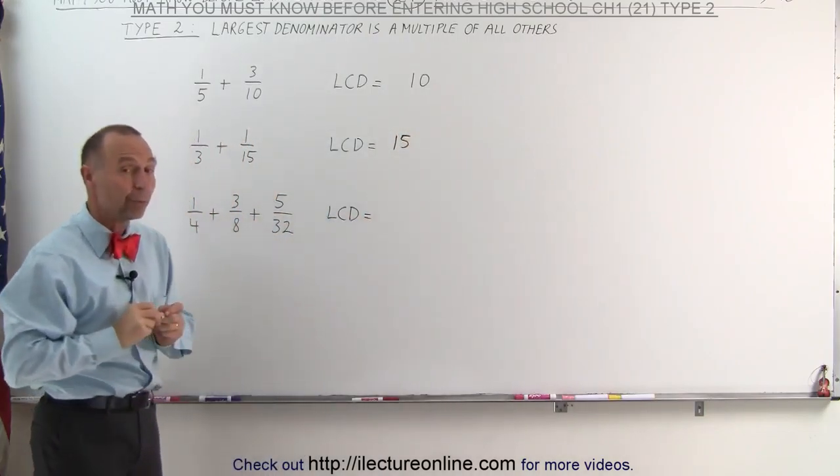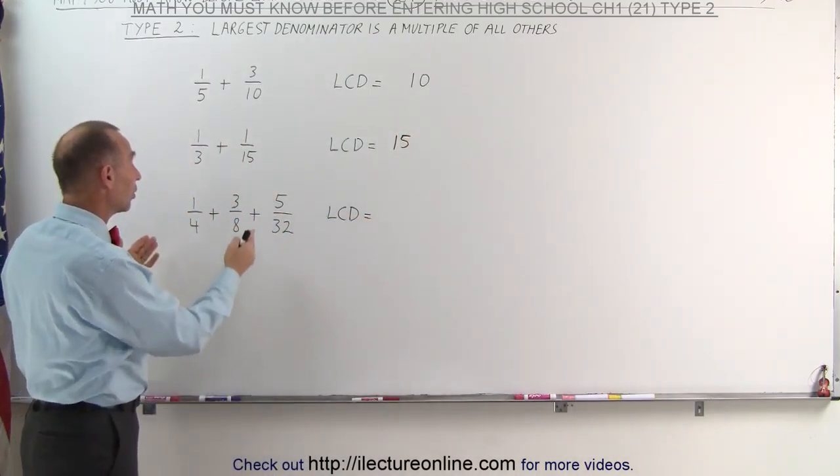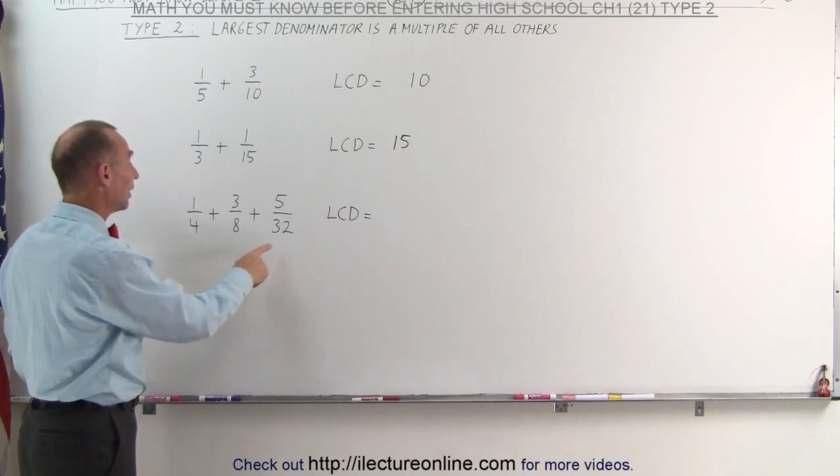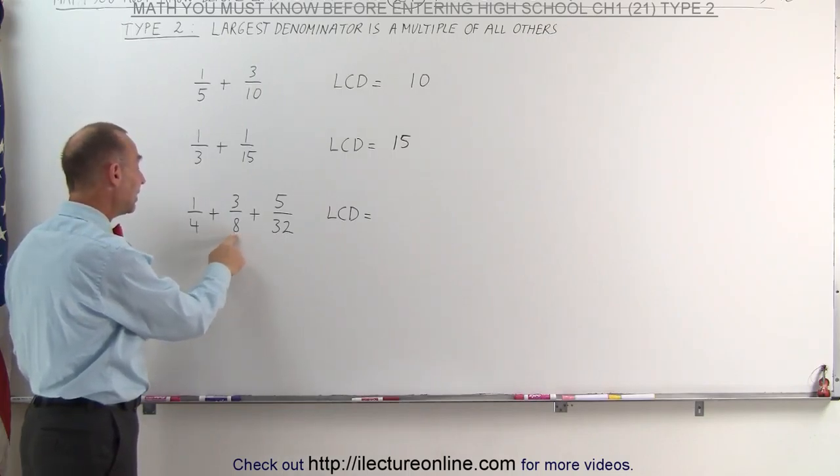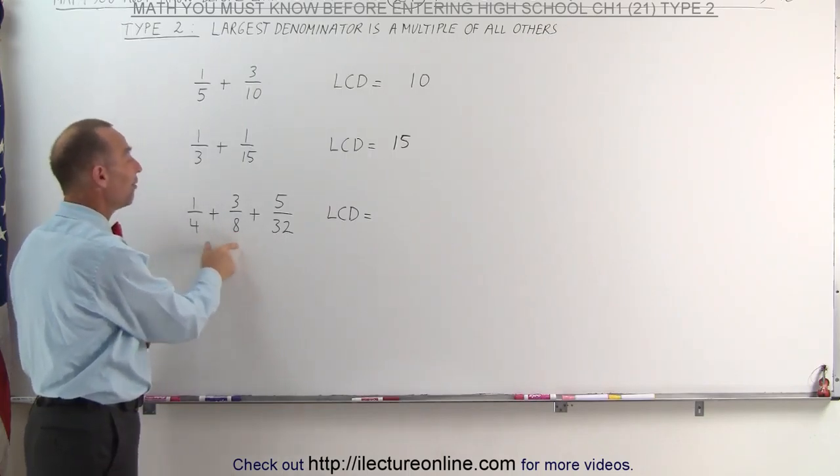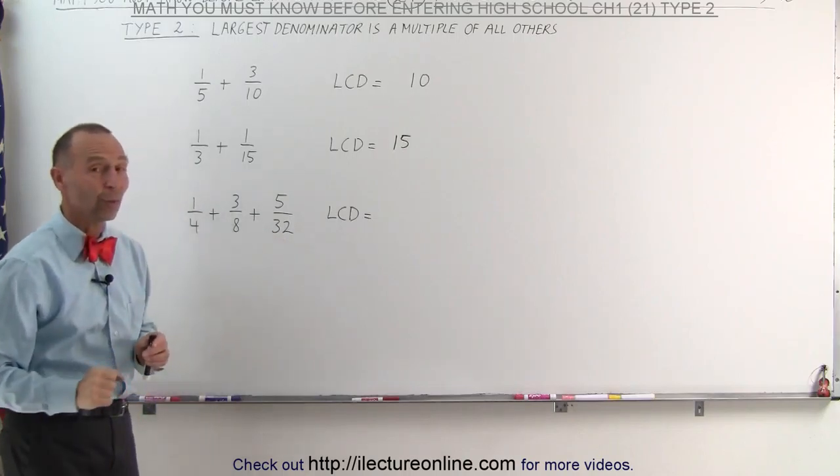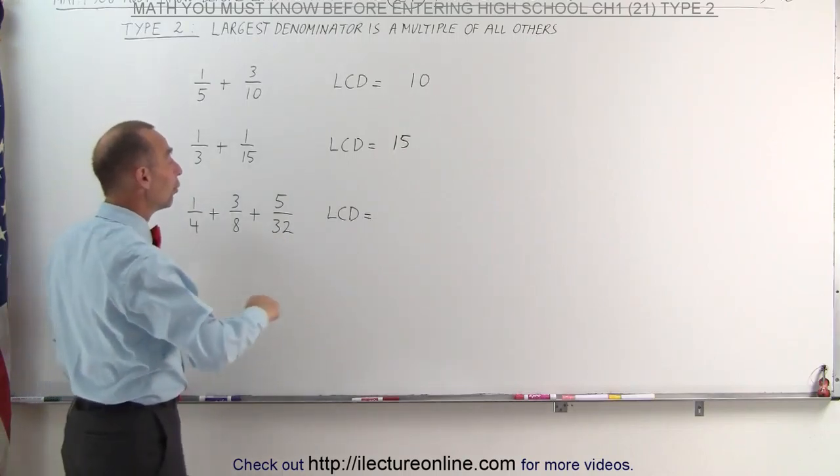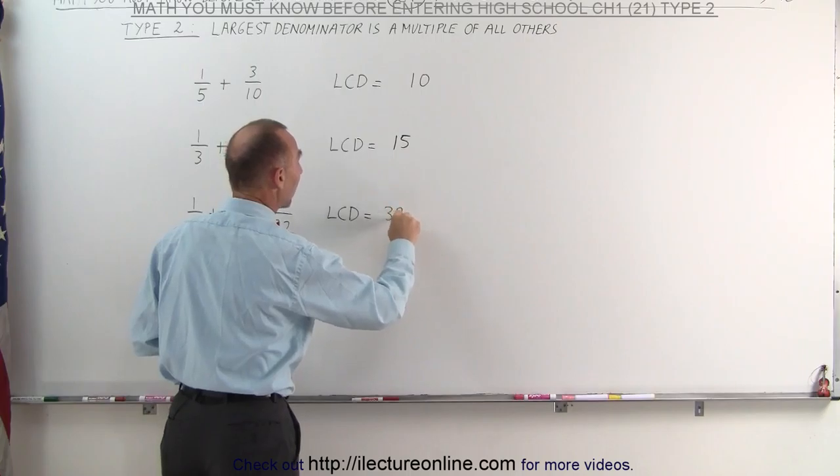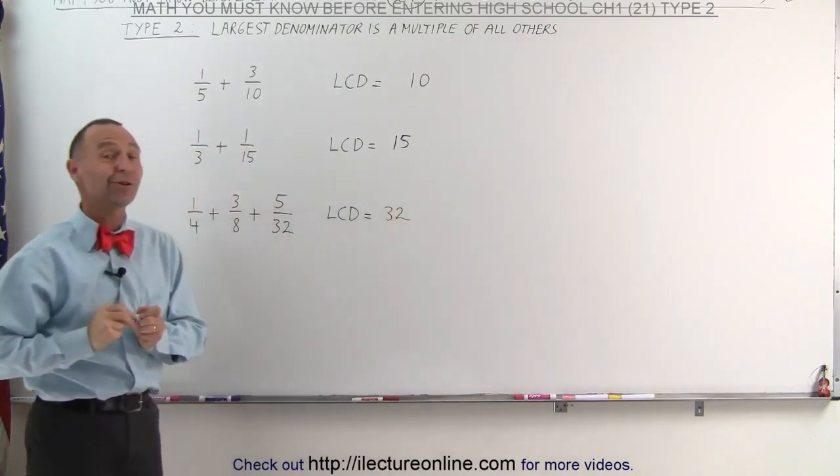And here, even when we have three or more fractions, again, look at the largest denominator and notice that both 4 and 8, the other two denominators, fit evenly into the largest one. Which means that 32 also becomes the lowest common denominator. And that was the easiest video of them all, wasn't it?